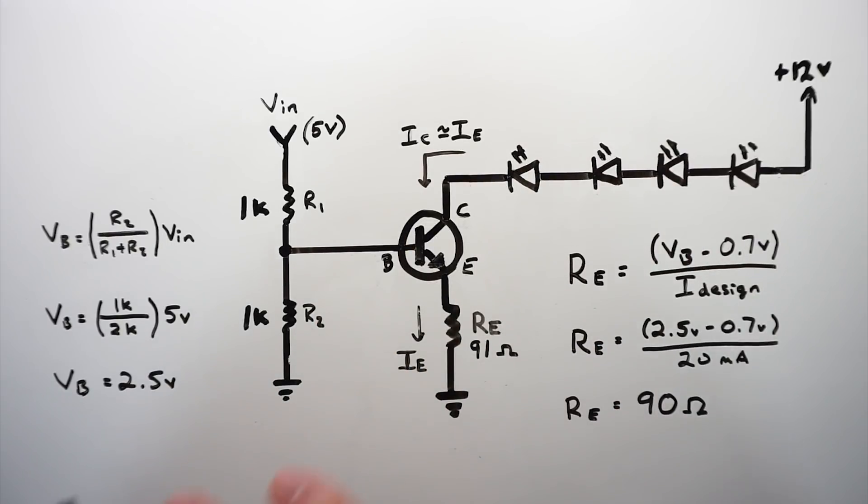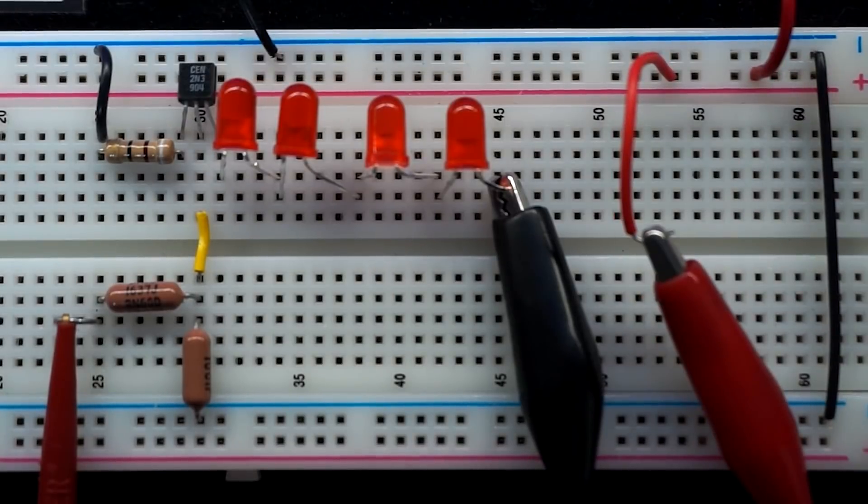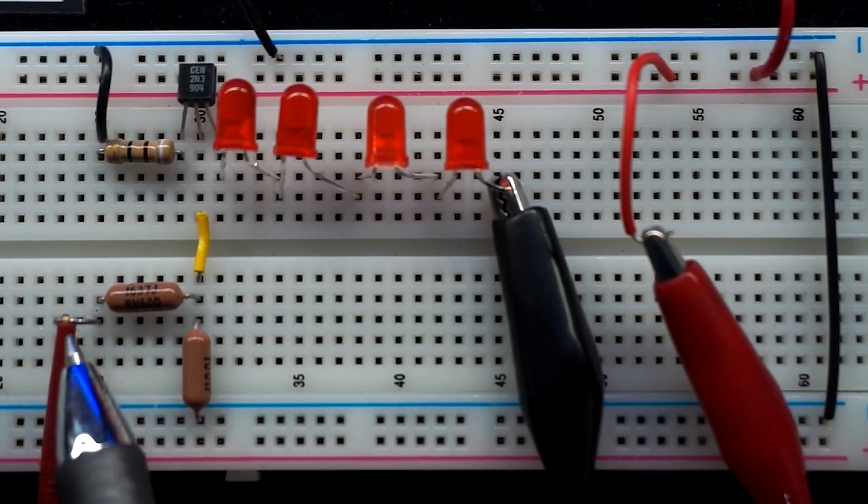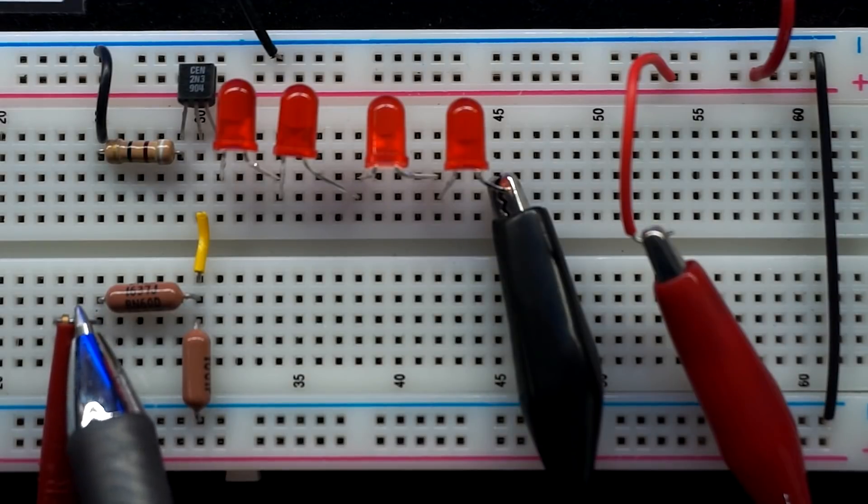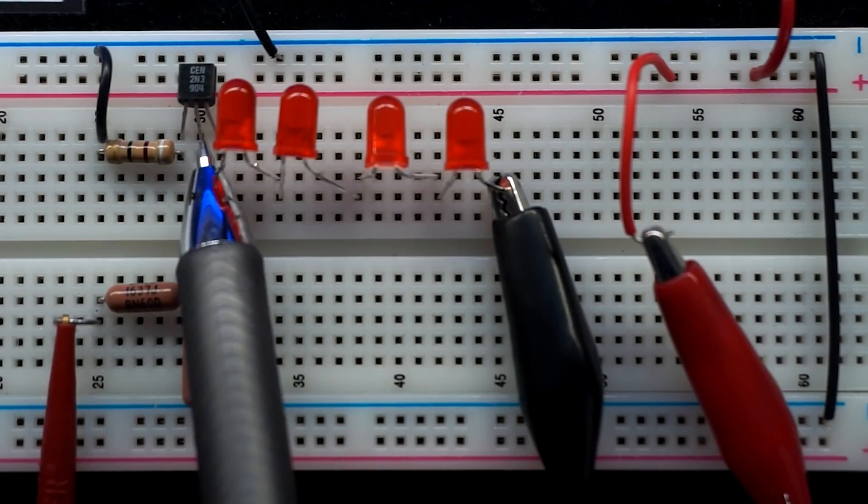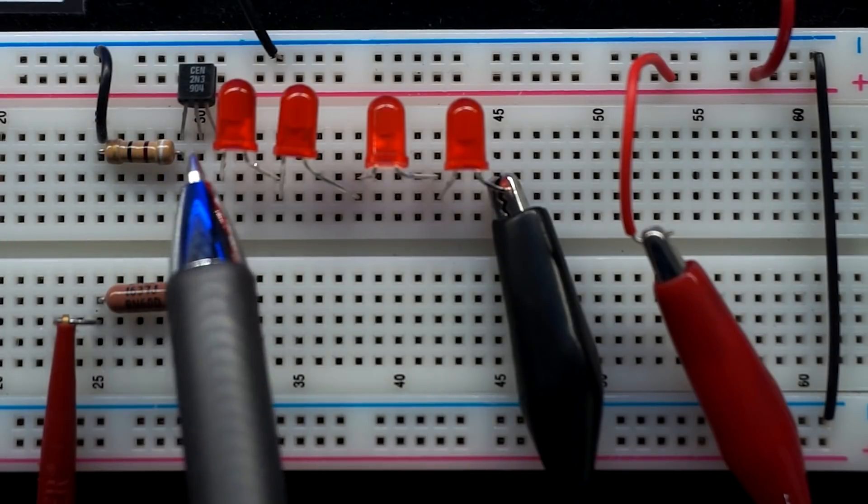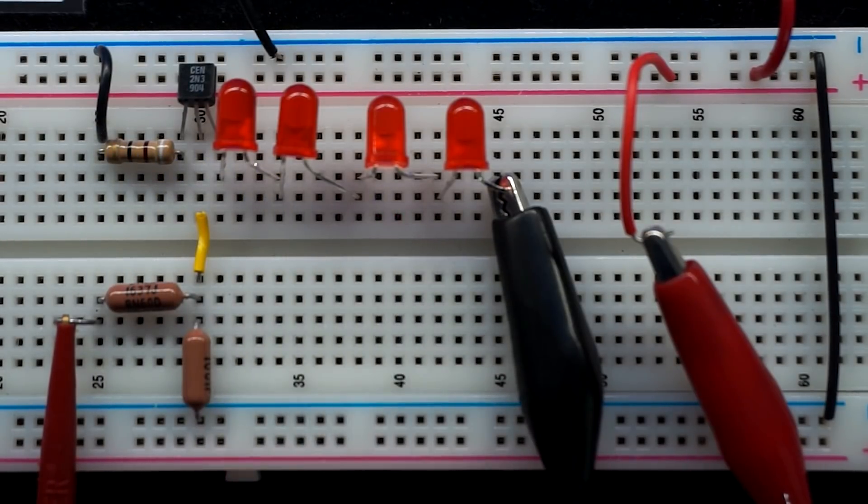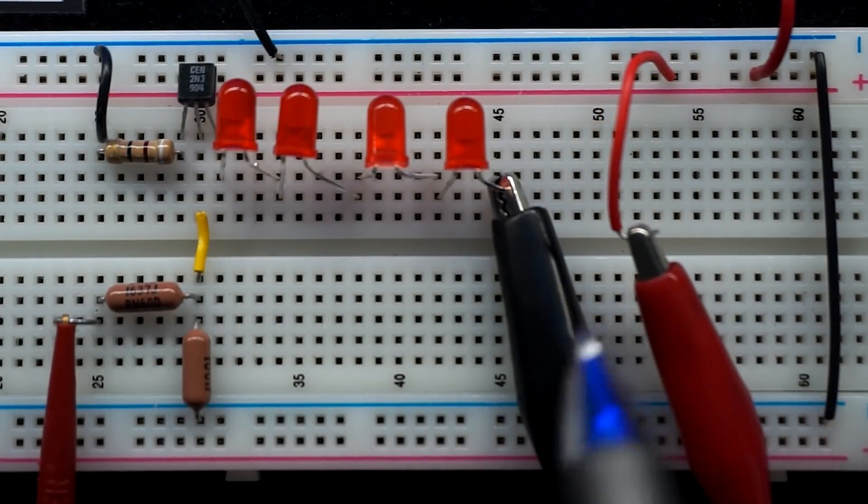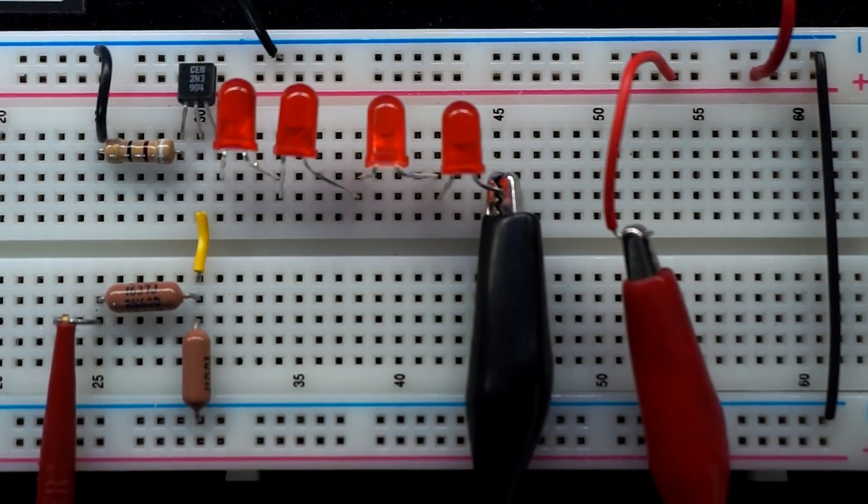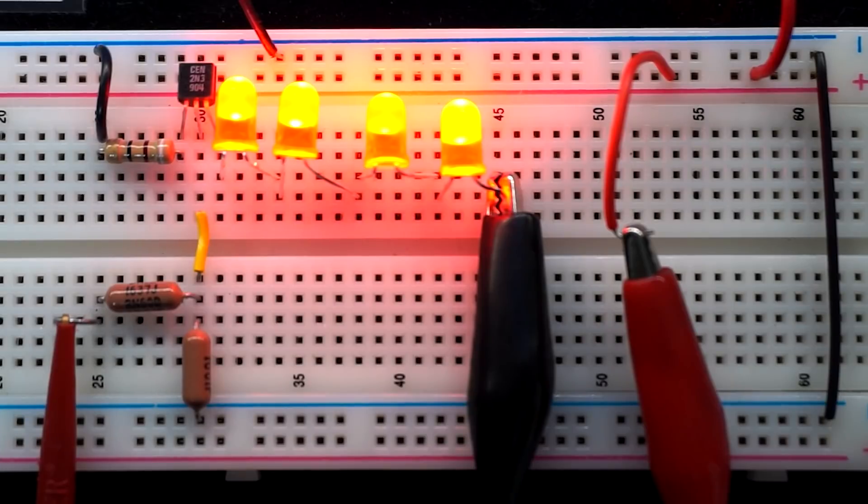So here's that very same circuit. We have our voltage divider here. We've got our 5 volt signal that simulates our Arduino or whatever microcontroller is connected here. That goes directly to the base of the transistor. Our emitter goes to ground with a 91 Ohm resistor, and our collector side is driving four red LEDs. And we want to make sure that we have 20 milliamps flowing through this circuit. So I have an ammeter, which is in series with these LEDs, and I can check the current. So let's turn this on. We'll apply 5 volts to our voltage divider, and there we go.